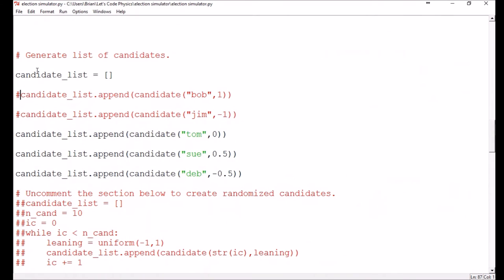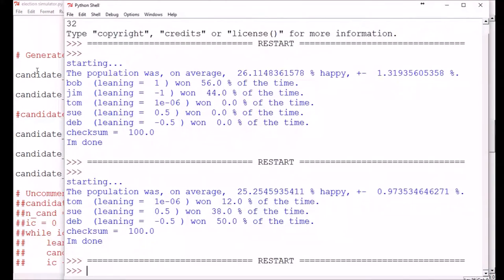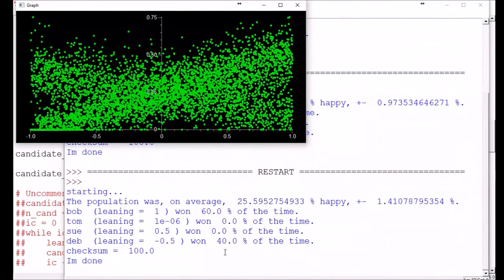We can also see this continue if we reintroduce one of the extreme candidates. If we put Bob back in, we see that Bob wins most of the time with the rest of the wins going to Deb, the candidate with the strongest leaning in the other direction. So this population satisfaction comes out pretty consistently around 25%, with only a 1-2% standard deviation.